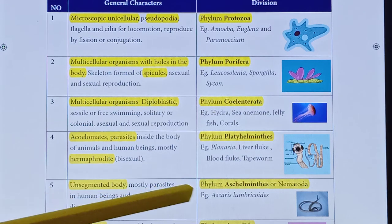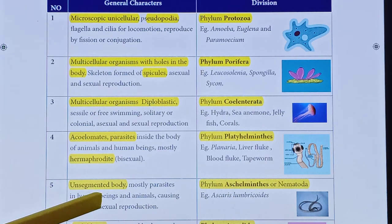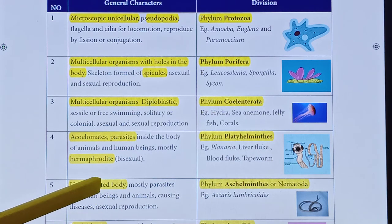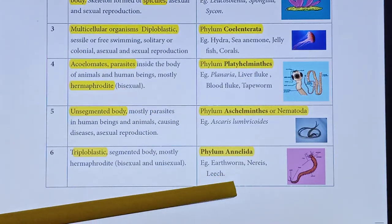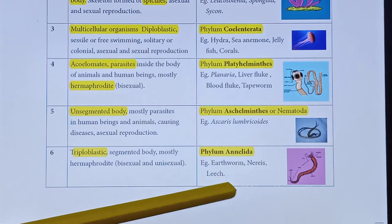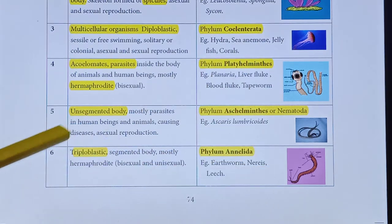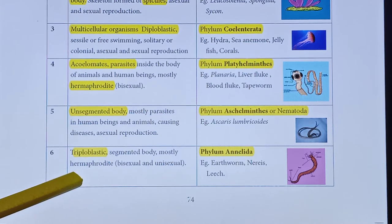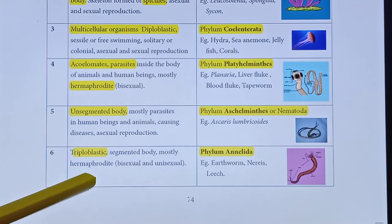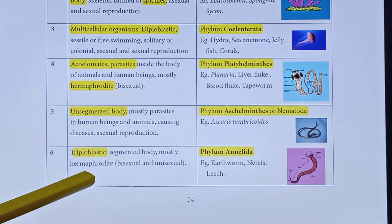Phylum Aschelminthes or Nematoda — example is Ascaris lumbricoides. They have an unsegmented body and are mostly parasites. The sexes are separate — male and female are different. Phylum Annelida examples include earthworm, Nereis, and leech. They are hermaphroditic — both male and female in one organism.